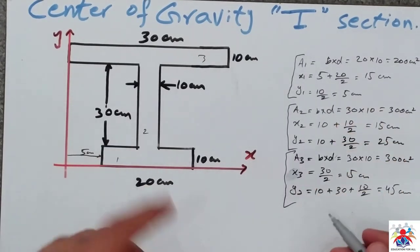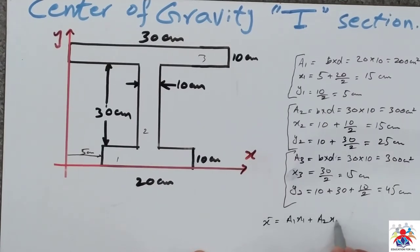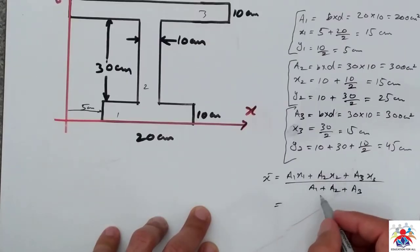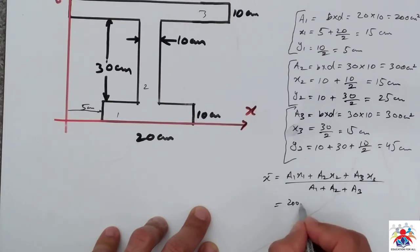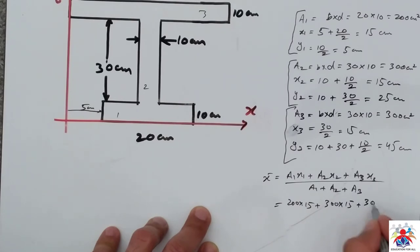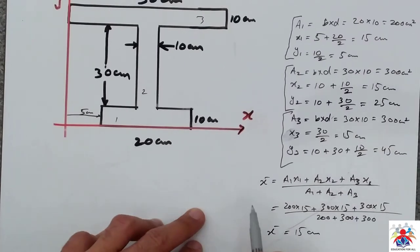Now we put the values into the formula for x-bar: x-bar equals (A1·x1 + A2·x2 + A3·x3) divided by (A1 + A2 + A3). Plugging in: (200 × 15 + 300 × 15 + 300 × 15) divided by 800. The result is x-bar = 15 centimeters.